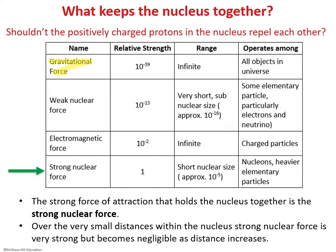Gravitational force is the weakest of all four forces, but its range is infinite — meaning it still applies even at infinite distances. Anything that has mass will exert some gravitational force. Next is the weak nuclear force, which is relatively stronger than gravity but still quite weak. It applies only over very short nuclear distances and only to certain elementary particles, including electrons and neutrinos.